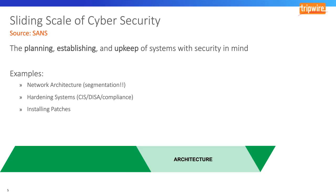The goal of the architecture phase is to establish a base for which other security components can be built upon. It's not just planning and establishing that are important — it must also incorporate general upkeep, such as installing the latest patches and reviewing the network to make sure no new systems are creeping into areas they shouldn't be. All too often, we read about security breaches where proper network segmentation, hardening, or just installing patches within 6, 12, or even 18 months could have prevented the attack.